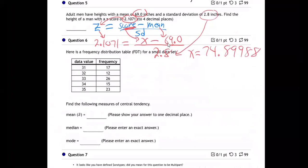So I got x equals 74.89988. They want me to round to four decimal places. So I put a line after the fourth spot. This is an 8, which means bring that up, right? 74.8999. So that's our answer.